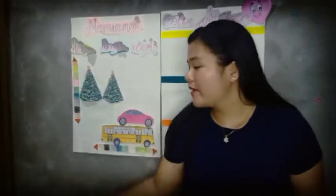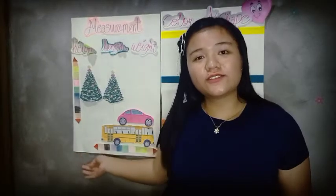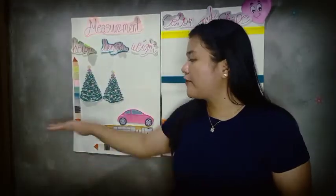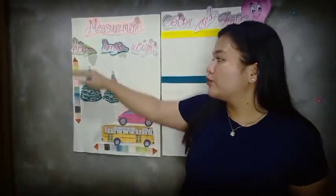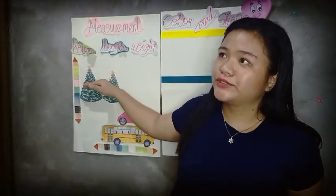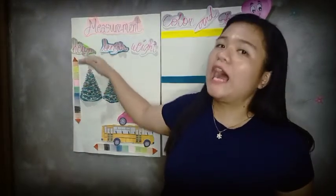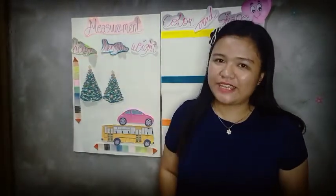Always remember that in measuring length, we measure from side to side to find out how long or short an object is. And when we measure the height of an object, we measure from the bottom up to the top to find out how tall or small an object is.